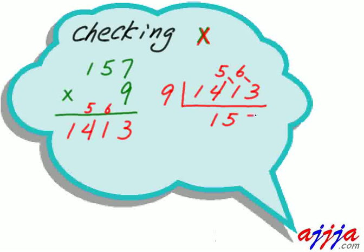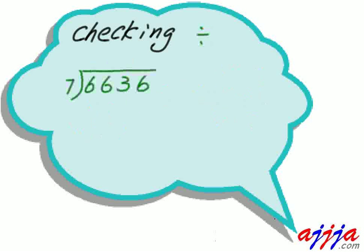Now, 63 divided by 9. 7 times. 7 times 9 is 63. So, no left over. No remainder. Perfect. That's it.